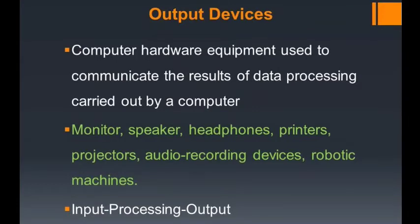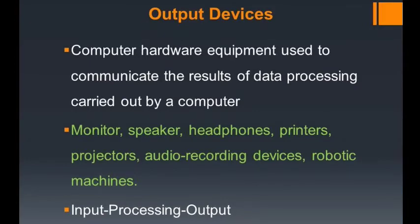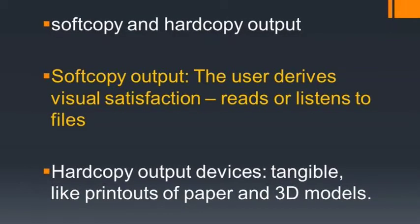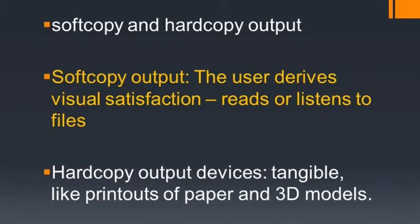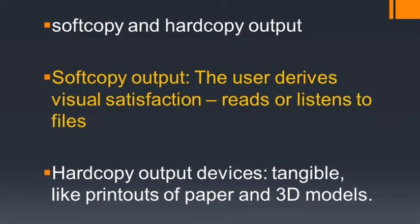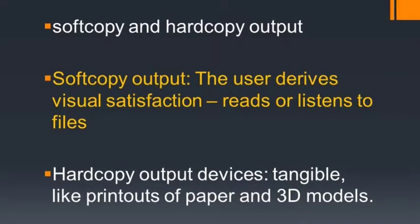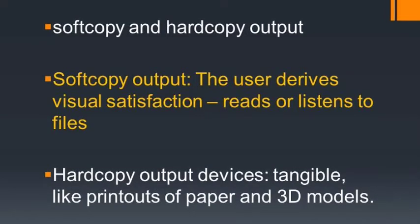Output is the culmination of a cycle which starts with the input of raw data and processing. These components are subcategorized under soft copy and hard copy output. Soft copy output includes the intangible experience — the user derives visual satisfaction by reading a message through display components, or listens to audio files through speakers. On the other hand, hard copy output devices are tangible, like printouts of paper and 3D models.